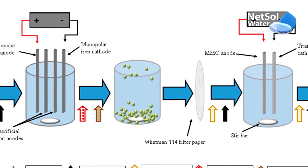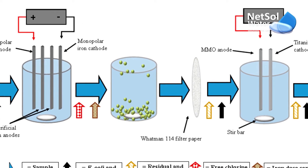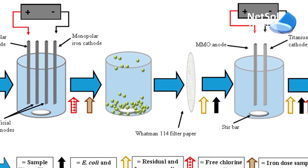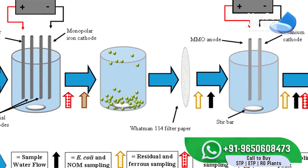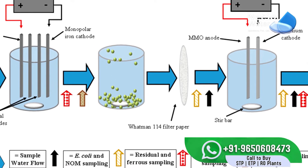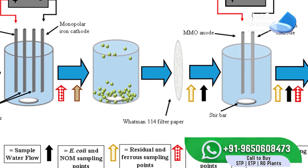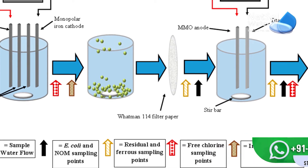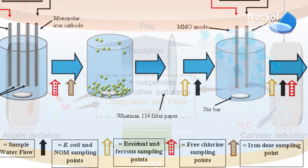The first stage is electrolytic oxidation and coagulant formulation. In this stage, the sacrificial electrode — usually iron or aluminum — is electrolytically oxidized, resulting in the creation of oxides, aluminum hydroxide, or oxyhydroxides.